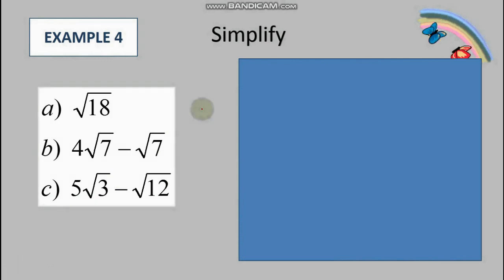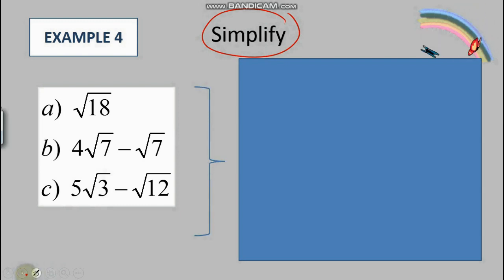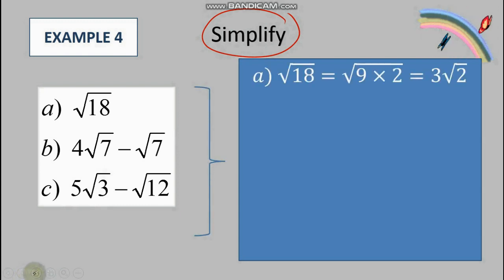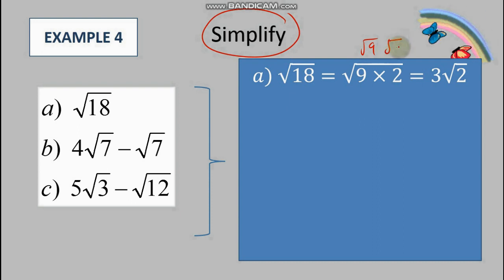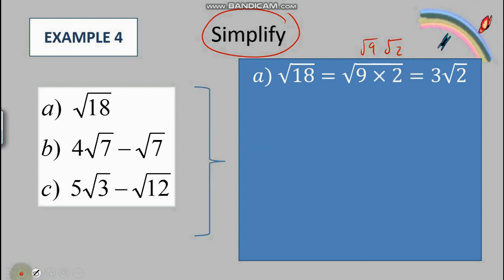Let's simplify some examples. For √18, we separate it into the simplest perfect root factor: 18 = 9 × 2, so √18 = √9 × √2 = 3√2. The √2 cannot be simplified any further. And 3√7 stays as 3√7 straight away.